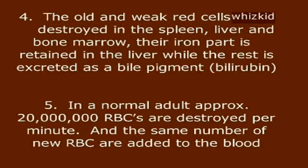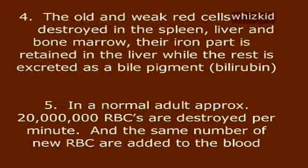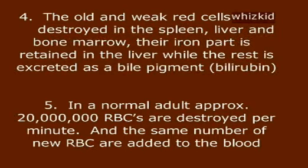Old and weak red cells are destroyed in the spleen, liver, and bone marrow. Their iron part is retained in the liver, while the rest is excreted as a bile pigment called bilirubin. In a normal adult, approximately 20 million RBCs are destroyed per minute, and the same number of new RBCs are added to the blood.